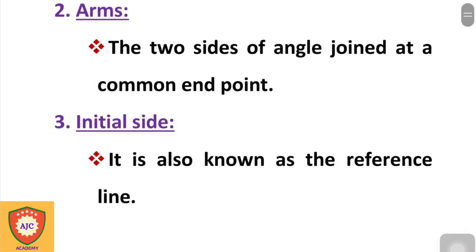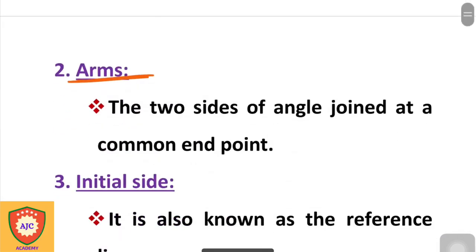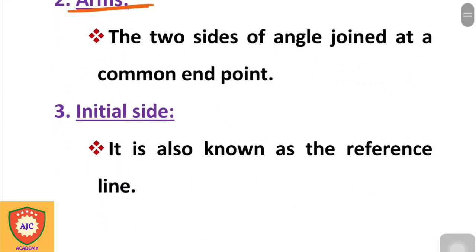The next part is the arms. Arms are the two lines or sides of the angle that are joined at the common vertex point. The sides of the angle joined at the common point are called the arms.